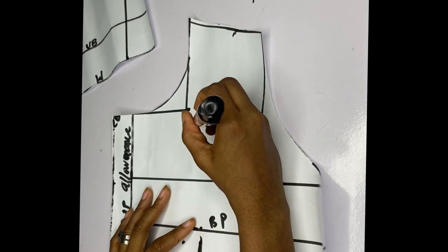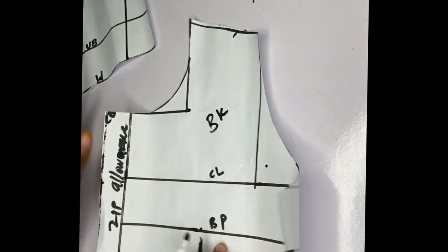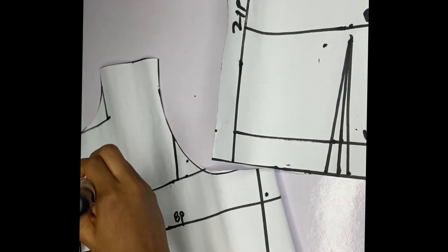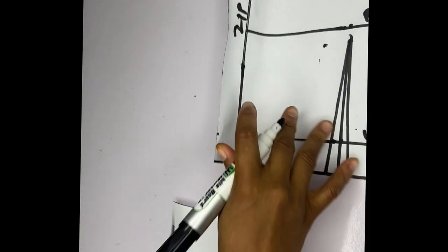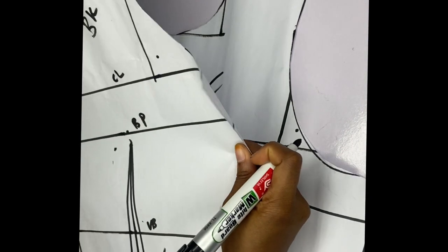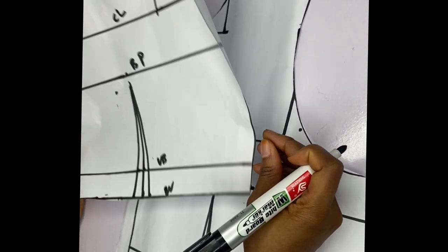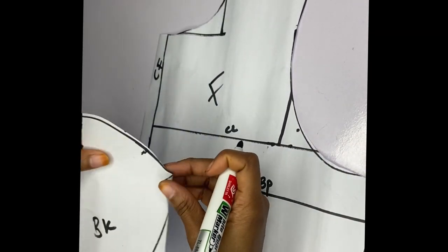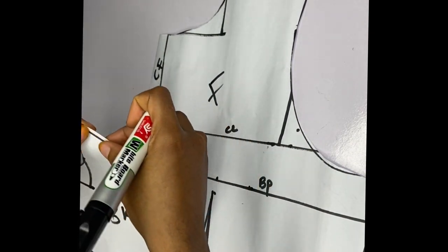This is the back and this is the front. You can see this is how to draw a basic bodice — notice how sloped the shoulder is.